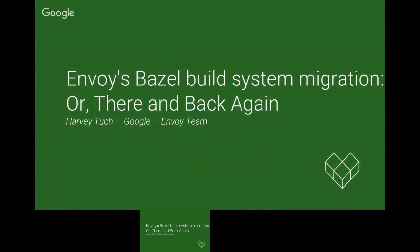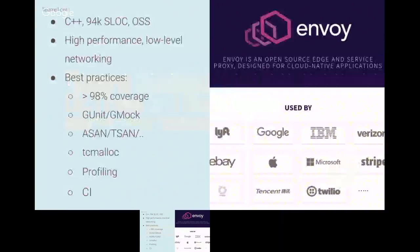Next is Harvey Tuch, who works at Google on the Envoy team, and he's going to talk about converting Envoy to Bazel. What is Envoy? It's an open source project — primarily a service mesh proxy designed for modern microservice architectures, also used as an edge proxy. It's developed on GitHub by Google, Lyft, and other contributors like Apple and Stripe. It's a mid-sized C++ project using modern C++ best practices.